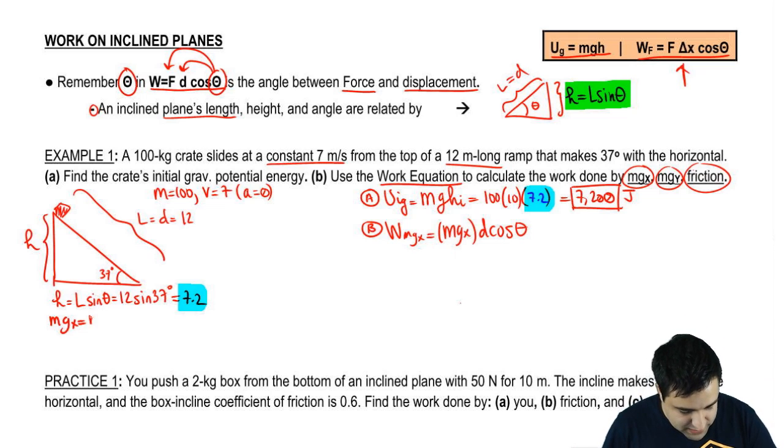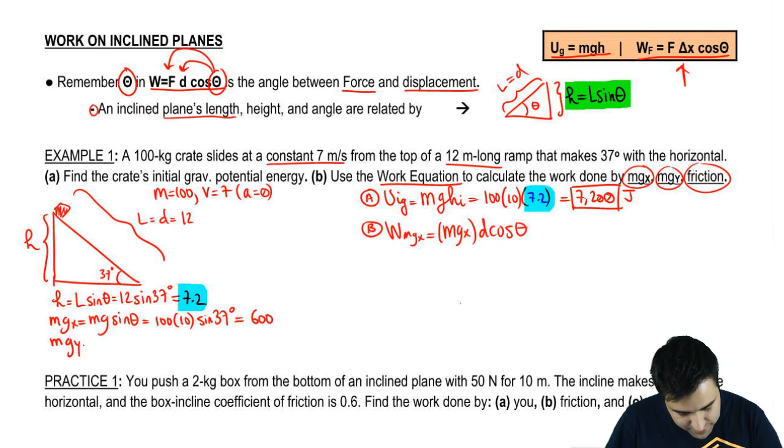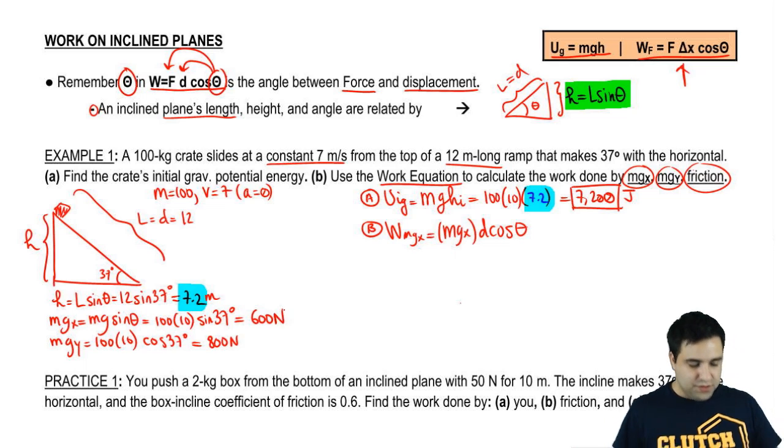MGX, I hope you remember, is MG sine of theta. So mass, gravity we're going to use 10, and sine of 37. When you do this real quick, you get 600. MGY is MG cosine of 37, and that's 800. These are forces. This is a height, but this is a force in Newtons.